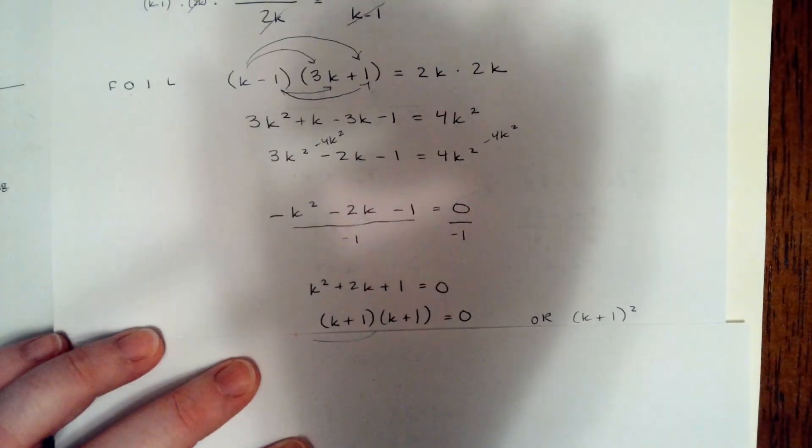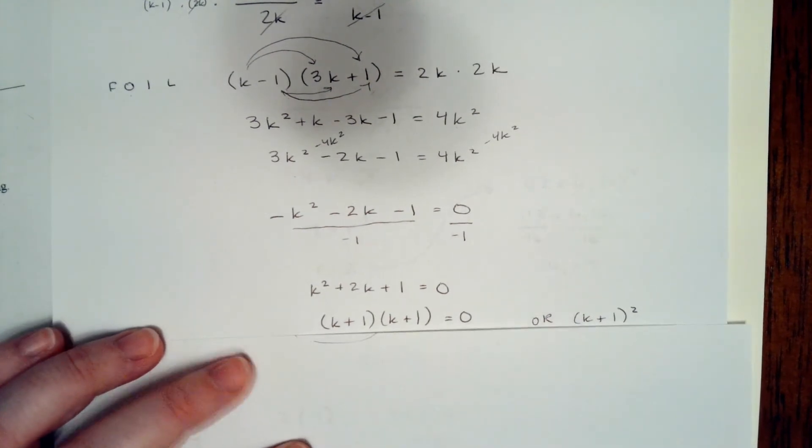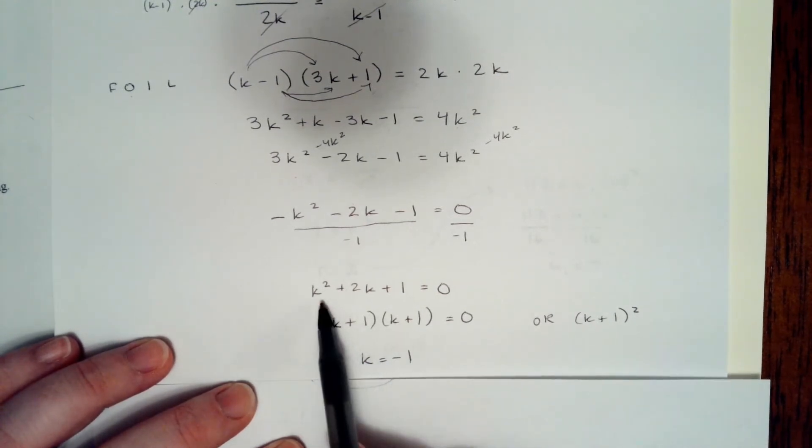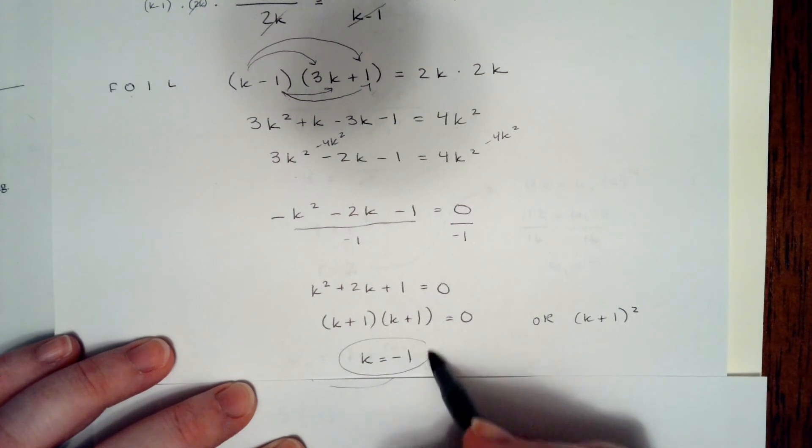For this problem, I prefer to write it this way. Because these are the same, there is only one solution for this quadratic equation, which is k equals negative 1. So k equals negative 1.